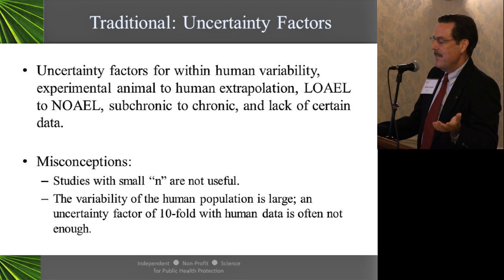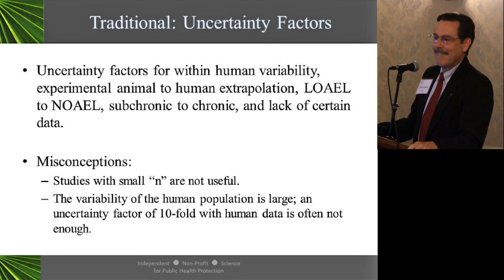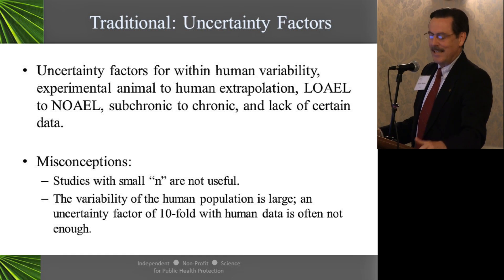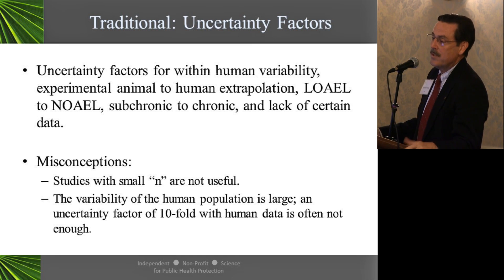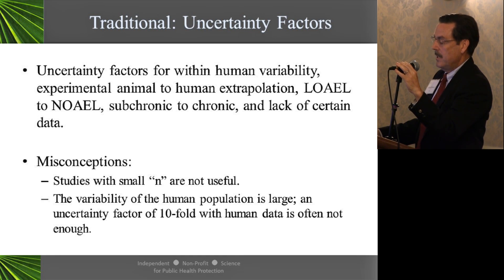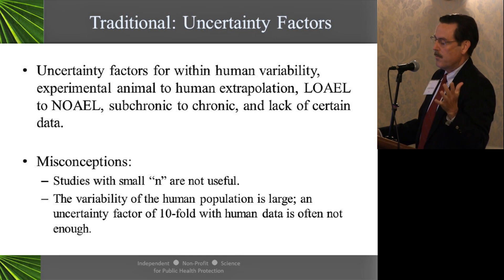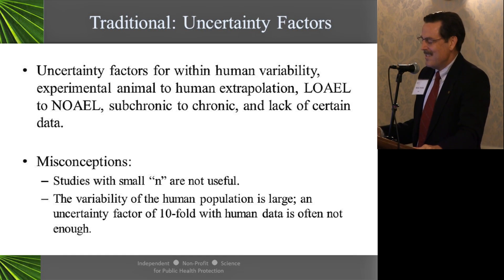Another tool we use is uncertainty factors or safety factors. How many people have heard that safety factors are arbitrary? They are not arbitrary — they are imprecise. If they were arbitrary, I might use an animal-to-human uncertainty factor even when I had a human study — that would be arbitrary. Uncertainty factors are imprecise, not arbitrary. Misconceptions: studies of small n are not useful — not correct. We have a safe dose based on dog data for cholinesterase inhibition, but if a study of two people shows cholinesterase inhibition at that dose, those dogs are not providing sufficient information.